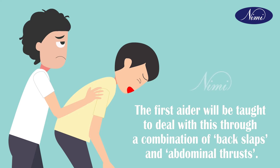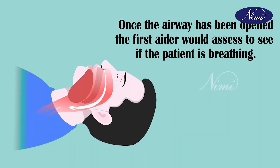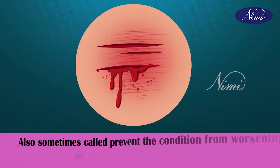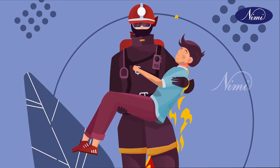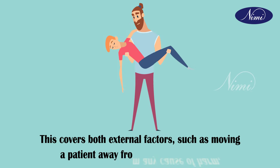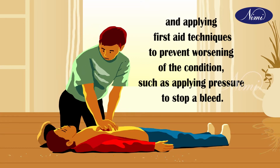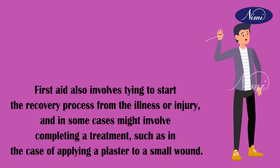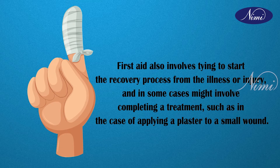The first aider will be taught to deal with choking through a combination of abdominal thrusts. Once the airway has been opened, the first aider would assess to see if the patient is breathing. Prevent further harm — also sometimes called 'prevent the condition from worsening' — covers both external factors such as moving a patient away from any cause of harm, and applying first aid techniques such as applying pressure to stop a bleed. Promote recovery: first aid also involves trying to start the recovery process, and in some cases might involve completing a treatment such as applying a plaster to a small wound.